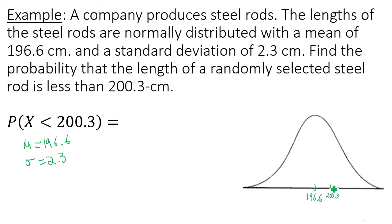That being said, when I find the probability a data value is less than 200.3, in other words the area to the left of 200.3, it should be more than 50 percent.